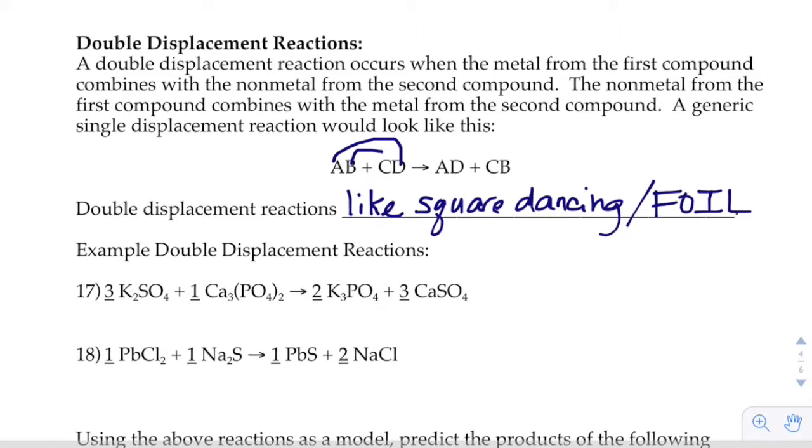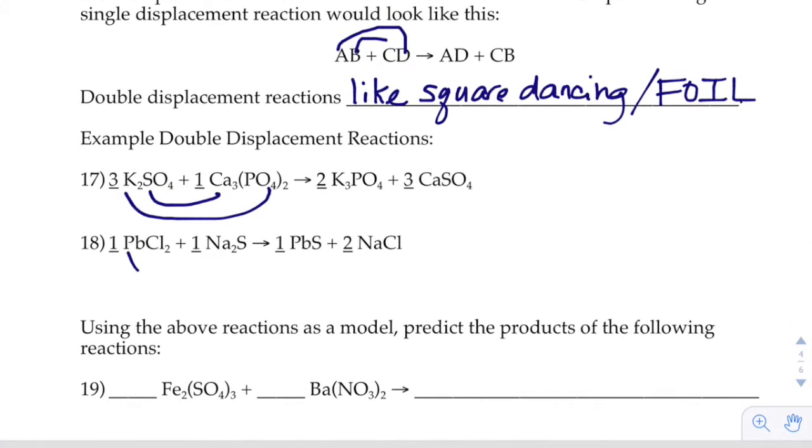So, our examples that are done for us. Potassium is going to combine with phosphate. Calcium combines with sulfate. And then you just check your charges of your new things, right? Or lead goes with sulfur. Sodium goes with chlorine.